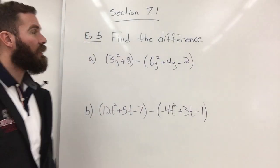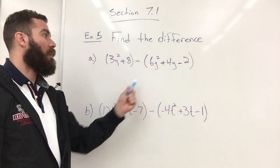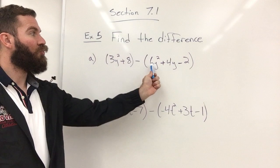This is example 5 for section 7.1. We are to find the difference in these two polynomials. You have a binomial and a trinomial.